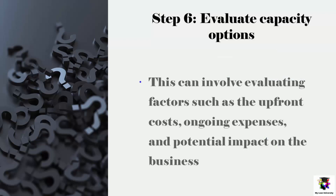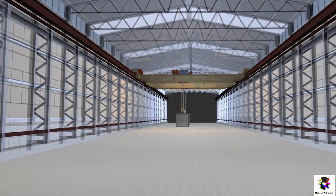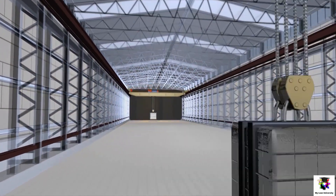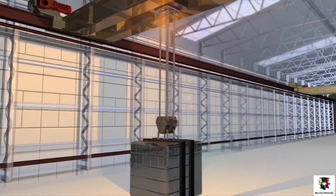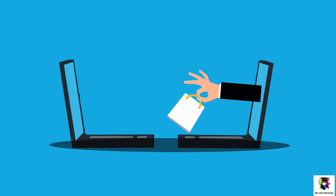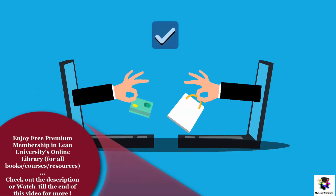The sixth step is to evaluate capacity options. Once the capacity options have been identified, the next step is to evaluate each option to determine which ones are most feasible and cost effective. This can involve evaluating factors such as upfront costs, ongoing expenses, and potential impact on the business. For example, a manufacturing company may evaluate the cost and benefit of increasing the number of shifts versus investing in new machinery, while a service-based company may evaluate the cost and benefits of hiring additional staff versus outsourcing certain tasks.